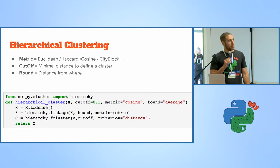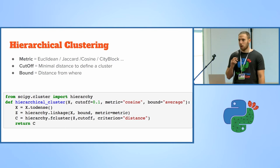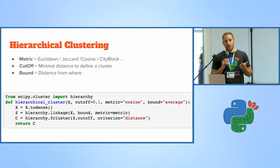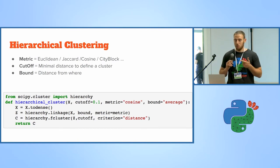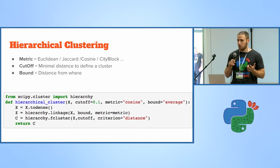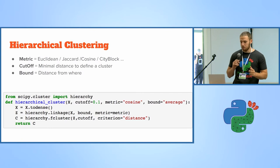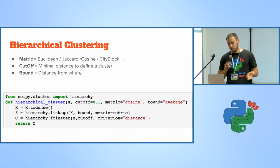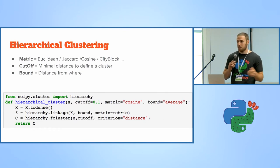Okay, so let's see how that could be done in Python. All hierarchical clustering algorithms get three parameters: the metric, how do I measure the distance; the cutoff, when do I stop, what is my stopping criterion; and the bound, where do I measure the distance from. Again, in the metric, six lines of Python you can apply hierarchical clustering for your project.